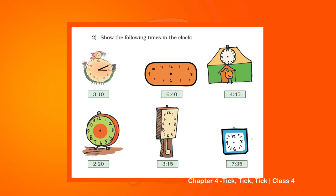In the second clock you have to mark 6:40. Are you ready? Did you rub the hour hand and minute hand? Now - 40 minutes, where should you draw the minute hand? Correct - towards 8. And the hour hand should be between 6 and 7. So now the time shown by your clock is 6:40.